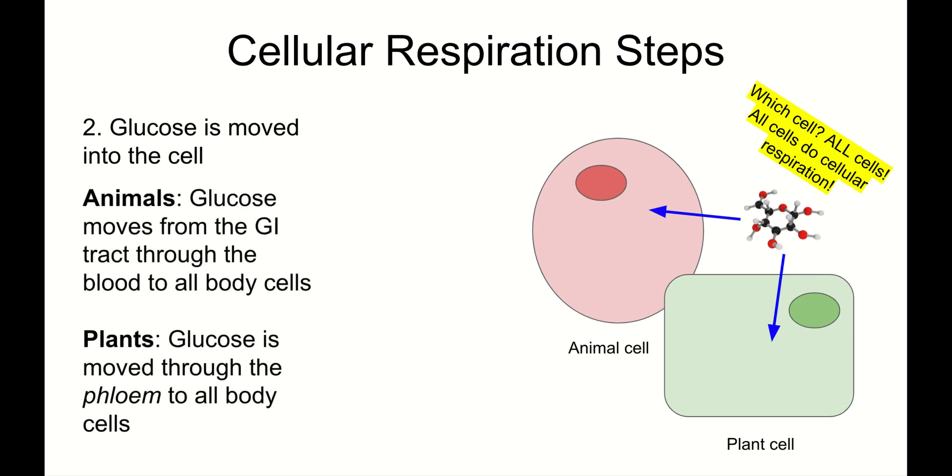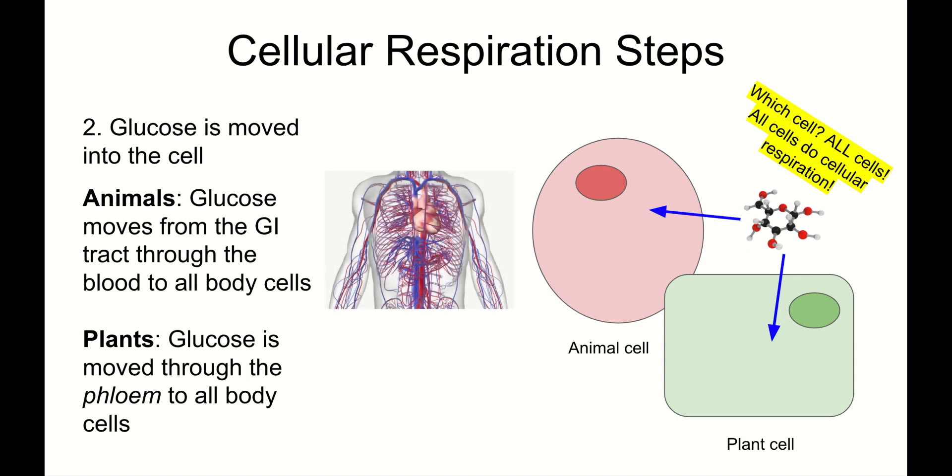In animals, how do we get glucose into animal cells? Glucose moves from the GI or gastrointestinal tract through the blood to all body cells. We've got our food in our gastrointestinal tract and our small intestine. We break it down into glucose. We move it through the blood to all of the different cells in our body. In plants, how does glucose move? Through the phloem. Glucose is moved through the phloem to all body cells. We might be moving our glucose from the leaves to the stem. We might be moving it from a sugar sink, like the roots, to a place that's low on sugar. We're moving it through the phloem.